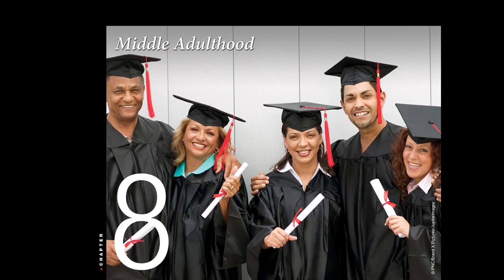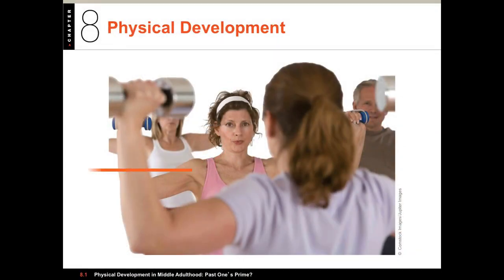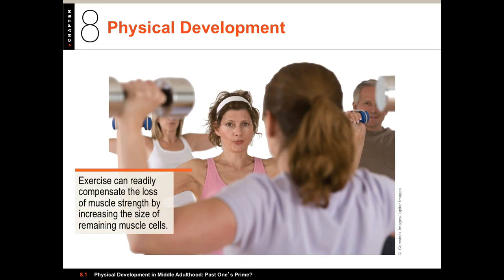There's actually a much longer version of this that you can download the slides from my Dropbox, but this is the abbreviated version that focuses especially on the material that's going to be on the exam. The first thing we want to talk about is physical development. Middle adulthood starts around the 40s, maybe 40 to 45, and goes through for about 20 years to maybe 60 to 65.